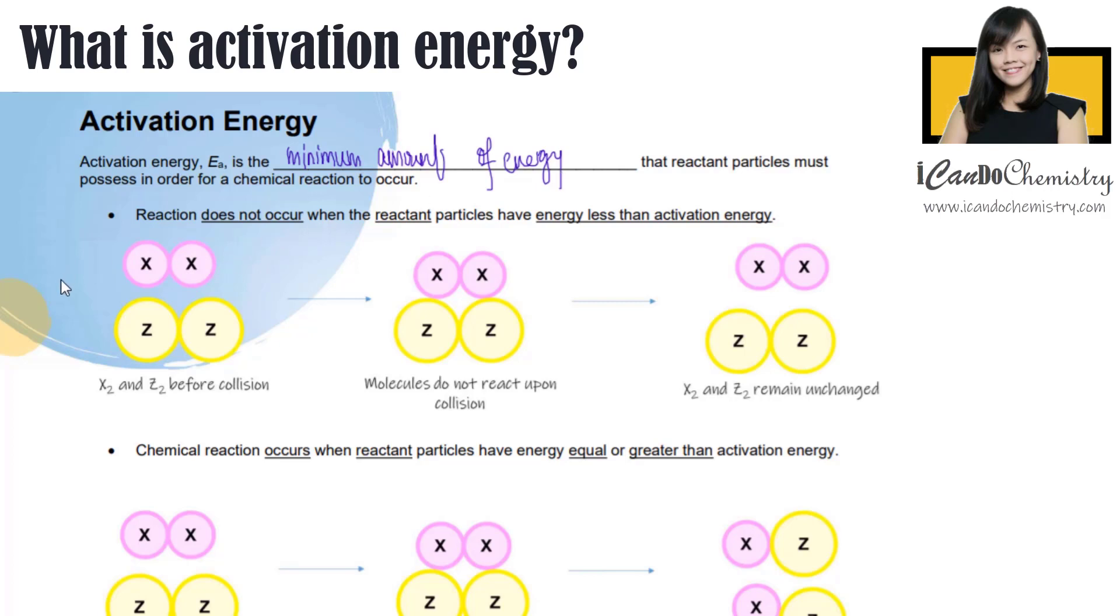Now let's take for example scenario one. We have X2 and Z2 before collision, and we add them together. They bump into each other, but there's no reaction - no new product is formed because the amount of energy that the particles possess is not enough for reaction to occur.